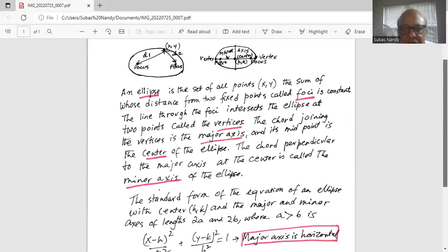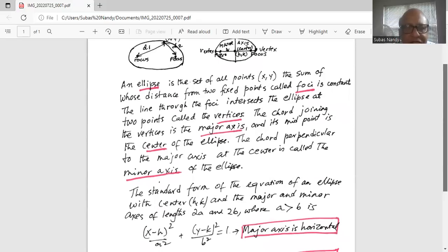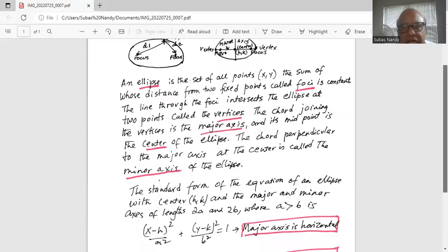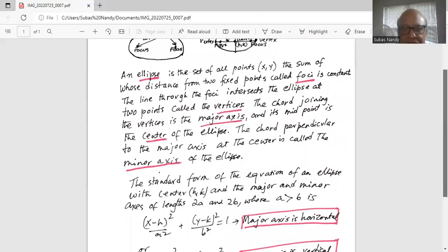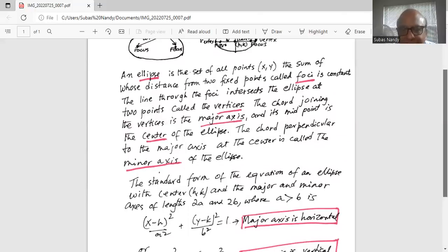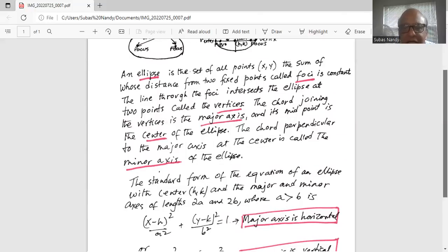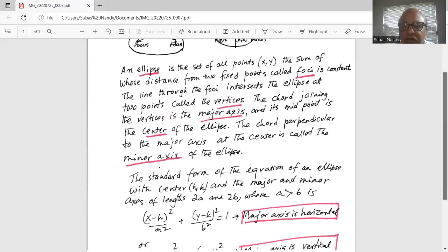The standard form of the equation of an ellipse with center (h,k) and major and minor axis of length 2a and 2b, where a is greater than b, is: (x-h)²/a² + (y-k)²/b² = 1. In this case the major axis is horizontal.